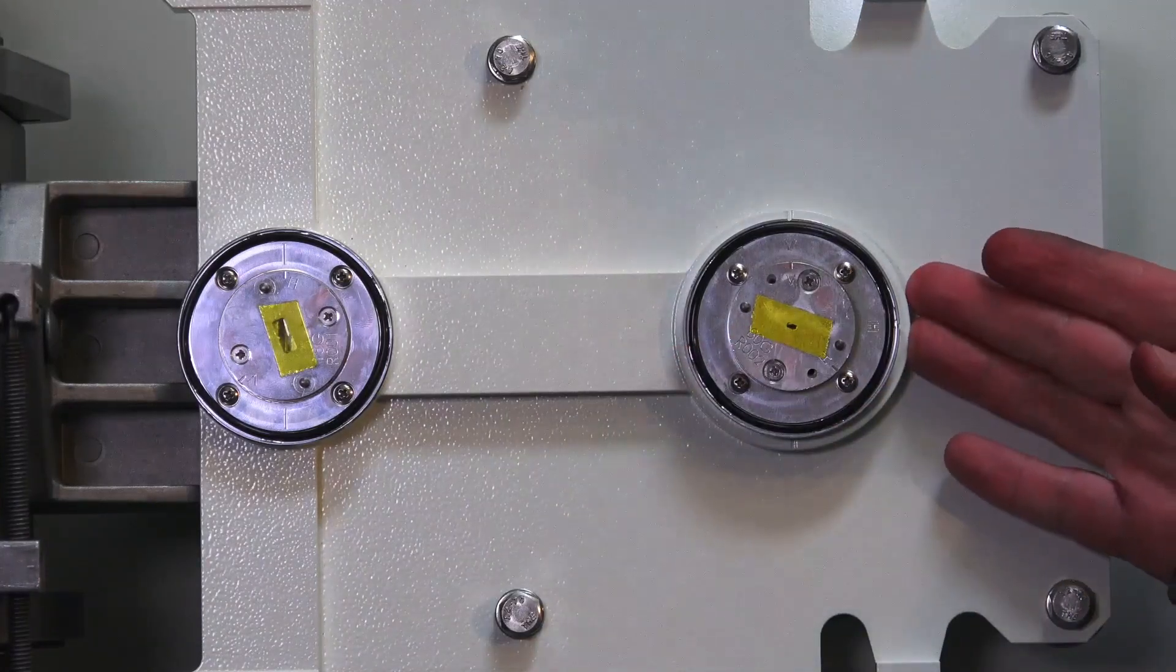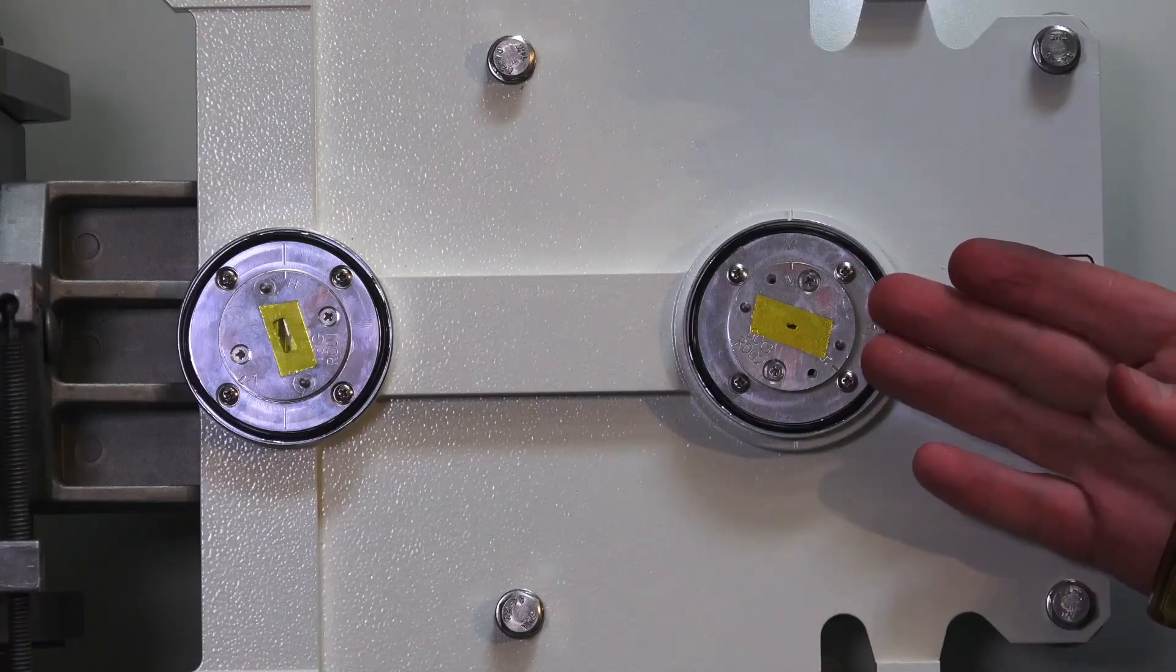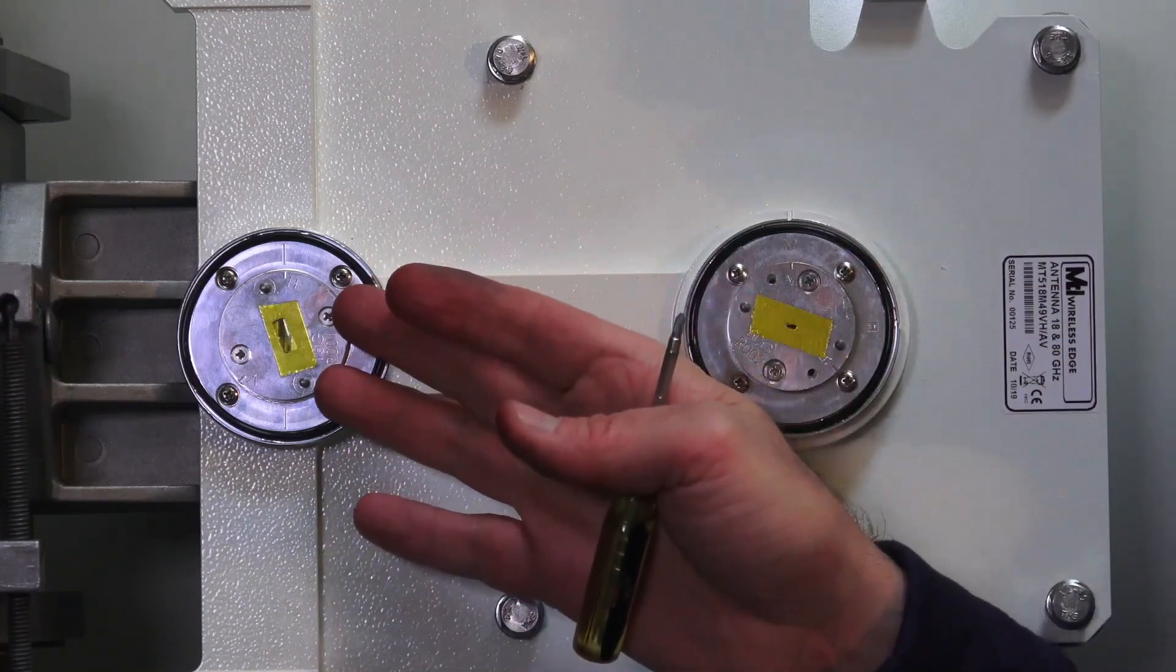Okay, so now we've set the millimeter wave side of the antenna for vertical polarization. Next, we're going to adjust the microwave side.